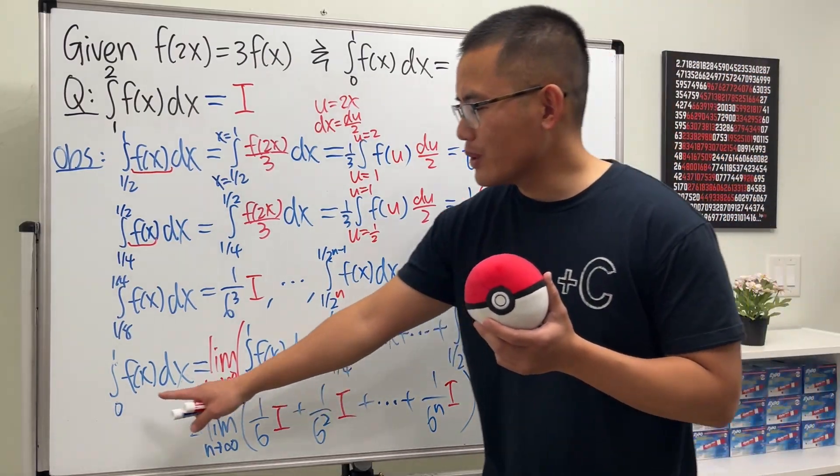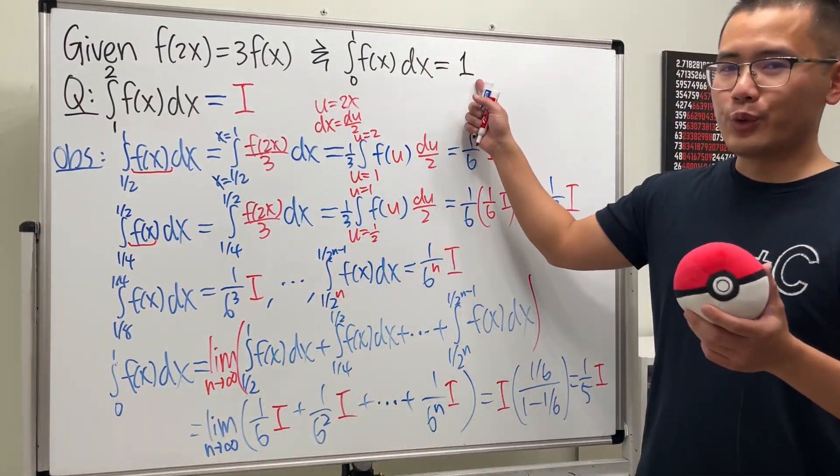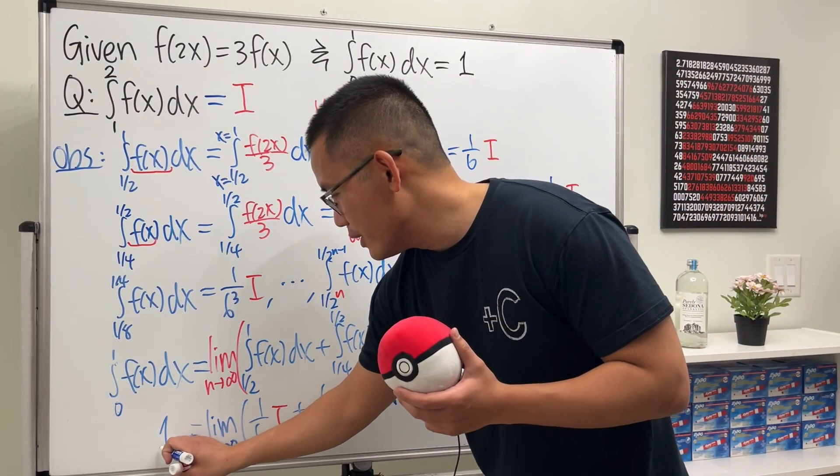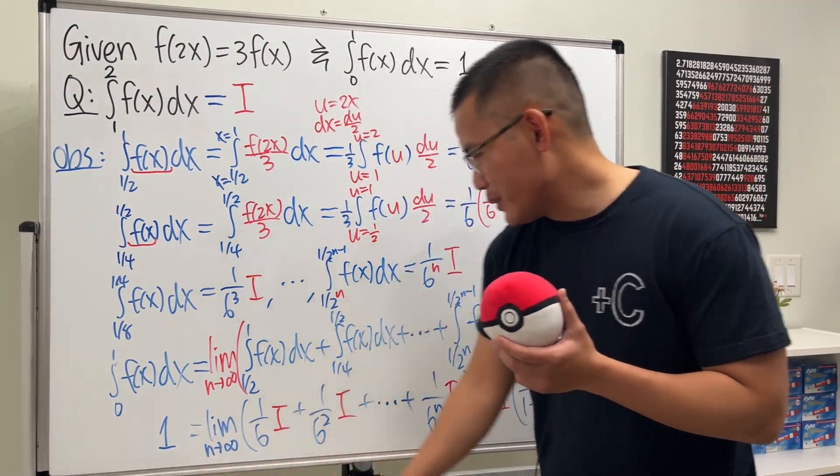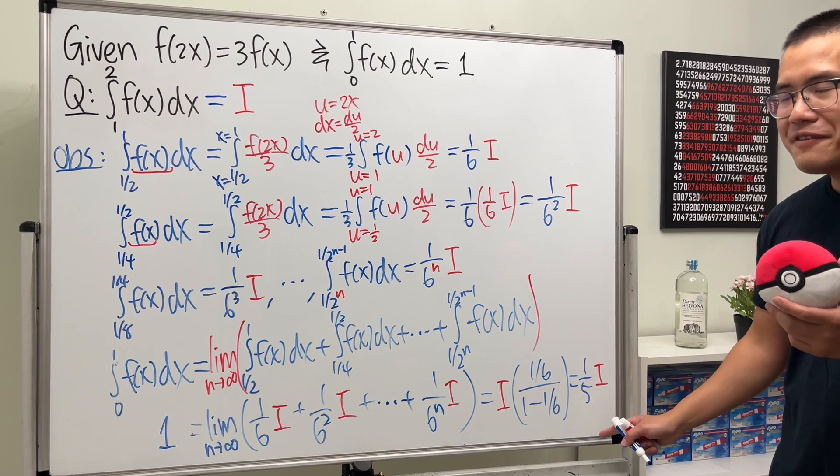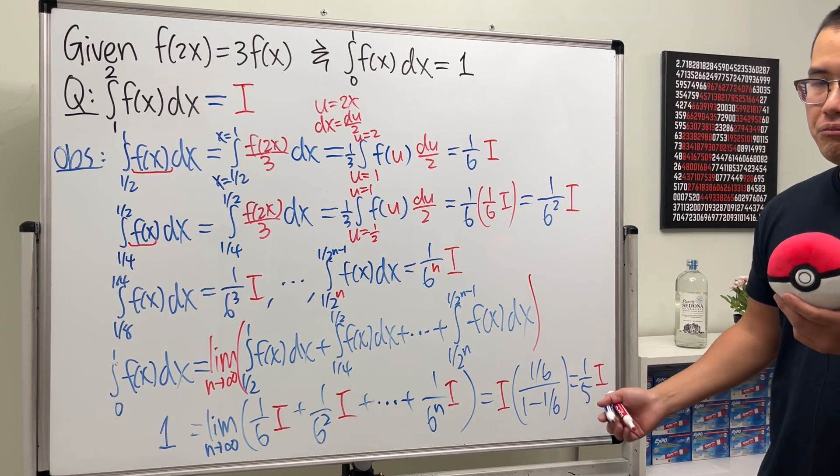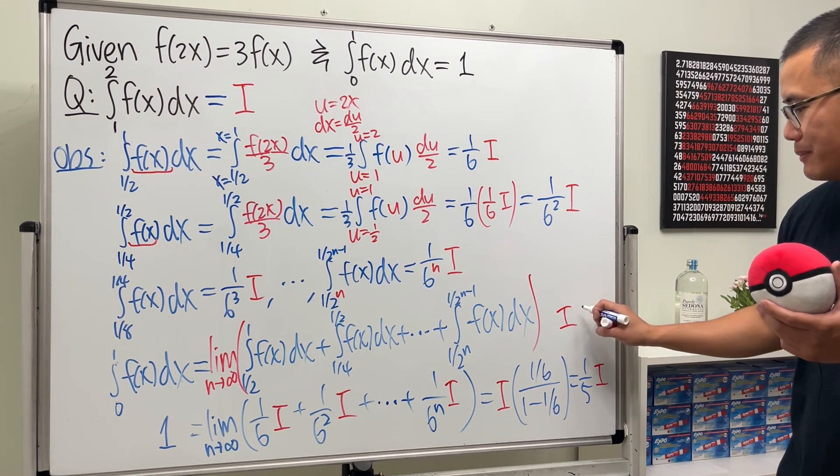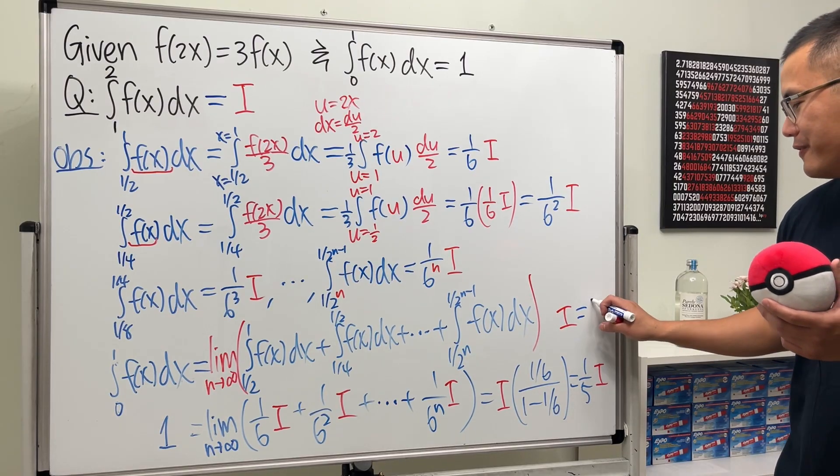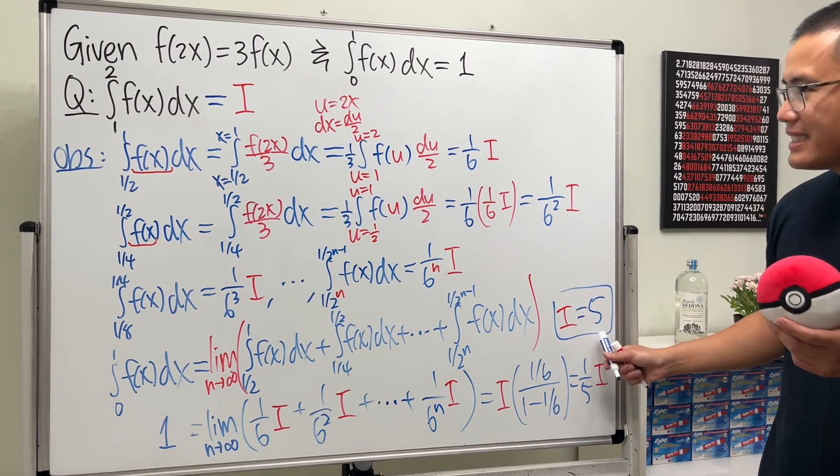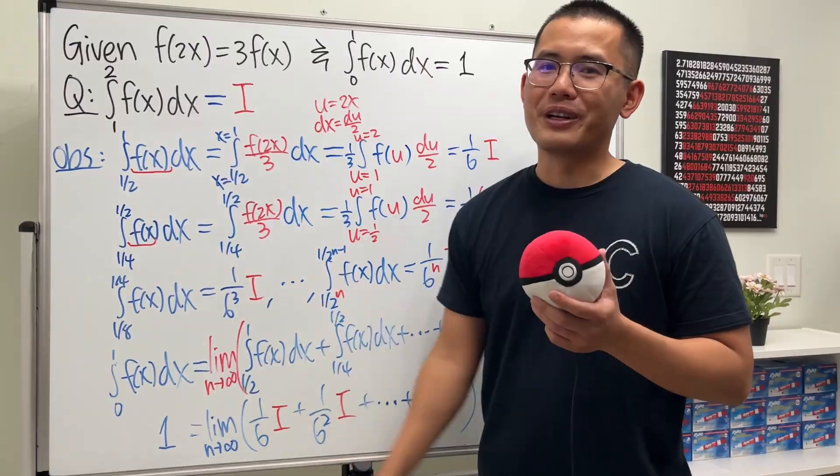Cool. And then don't forget that, what's this? It's just equal to 1. So, ladies and gentlemen, now we know 1 is equal to 1 over 5 times i, so multiply the 5 on both sides, i is just equal to 5. And that's the answer to this integral right here.